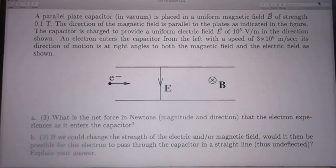An electron enters the capacitor from the left with a speed of 3 times 10 to the 6 meters per second.